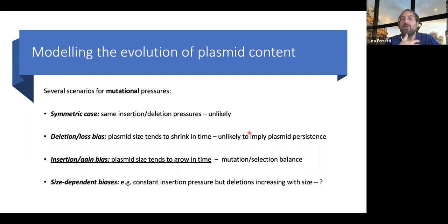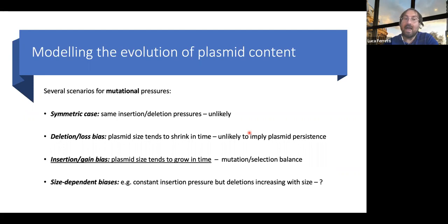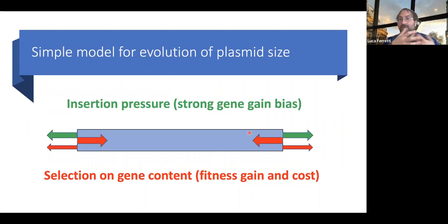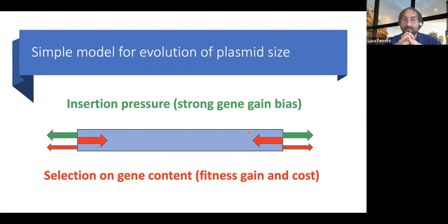There could also be more complicated size-dependent biases — for example, a constant insertion pressure, a constant rate of gene acquisition independent of plasmid size, but with increasing pressure for deletion. I will focus on the case of insertion bias to get some understanding of how plasmids may evolve. Specifically, I focus on a strong bias towards gene gain — essentially neglecting gene loss — simply assuming that gene loss is not comparable to the rate of gene acquisition.